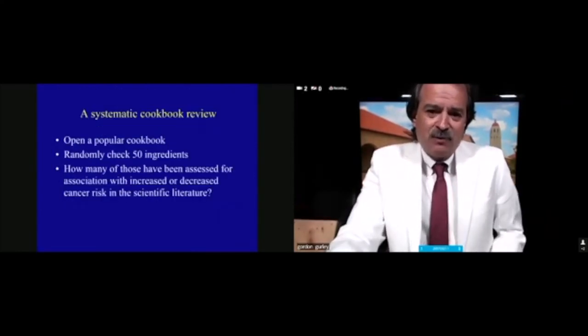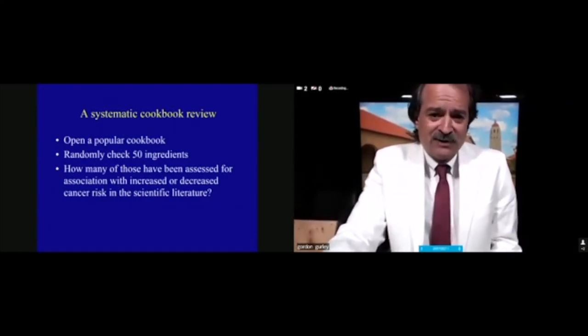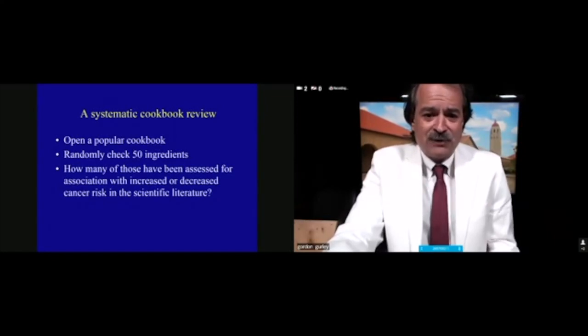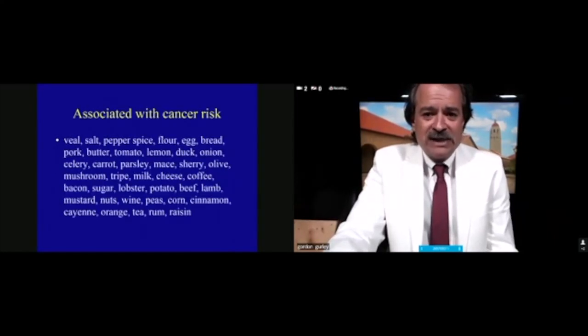Here's a systematic cookbook review that I published a few years ago. We used literally a cookbook, the Boston cookbook. It has been out there since the 19th century. We randomly checked 50 ingredients from that cookbook, and we asked how many of those have been assessed for association with increased or decreased cancer risk in the scientific literature.